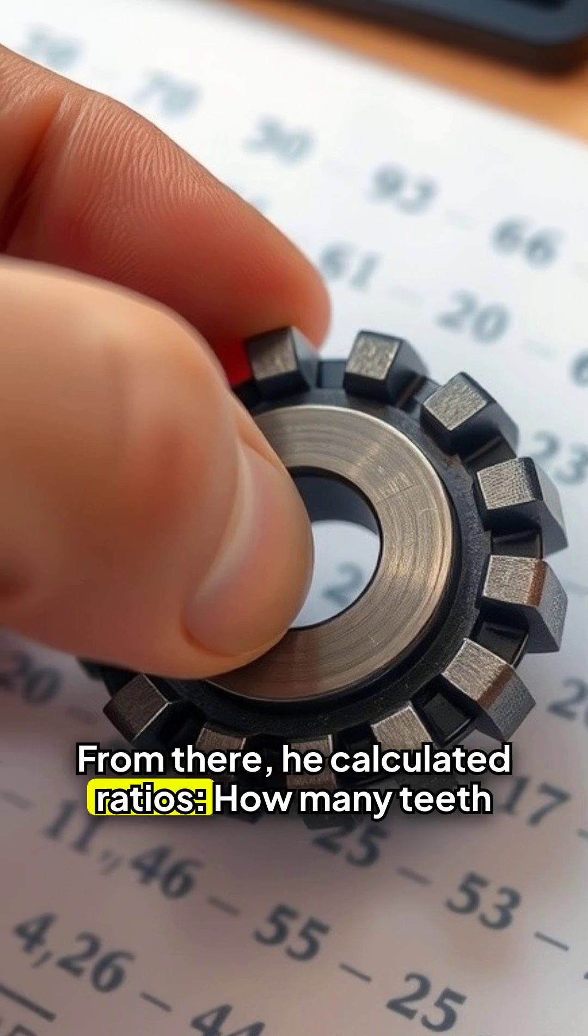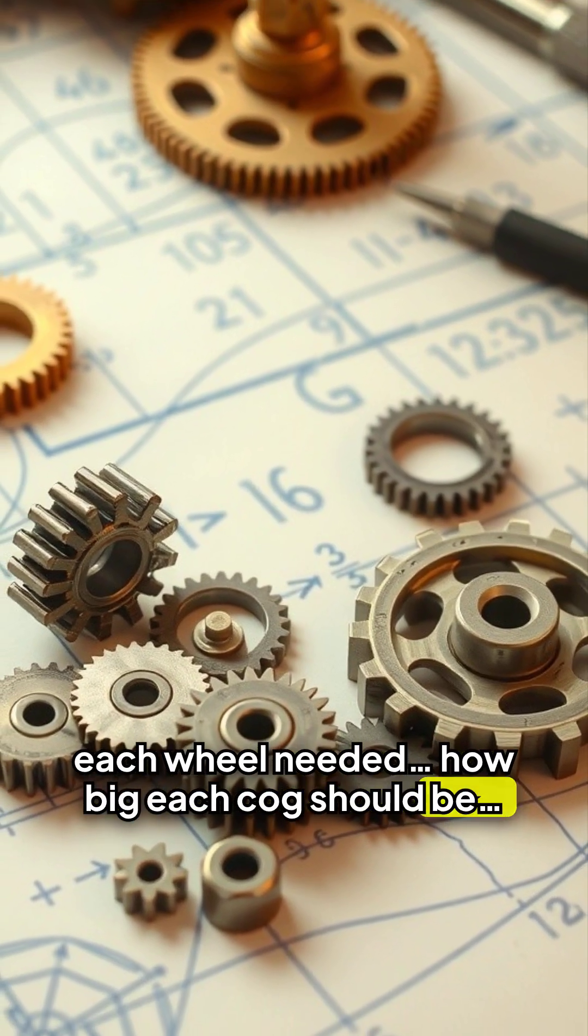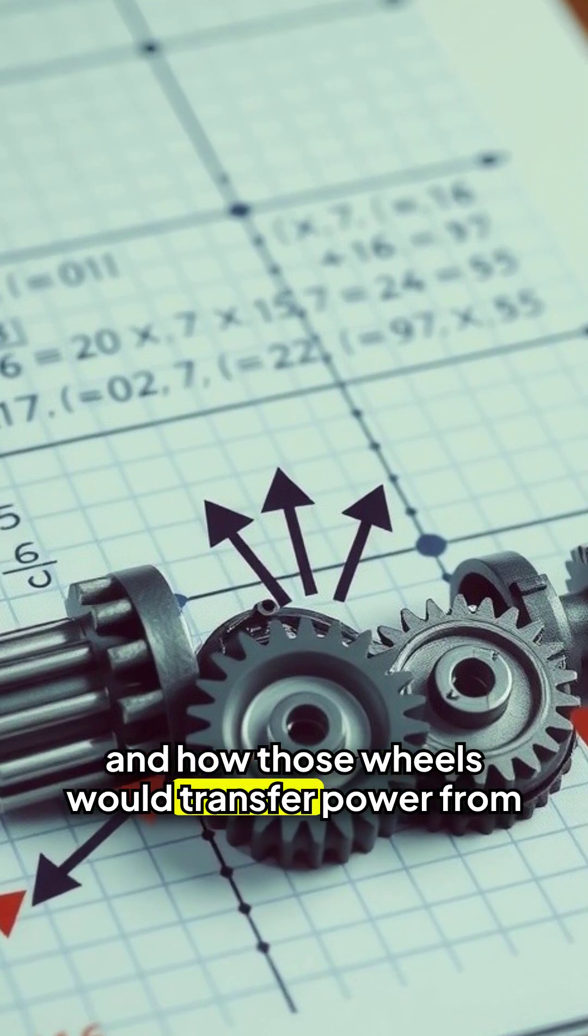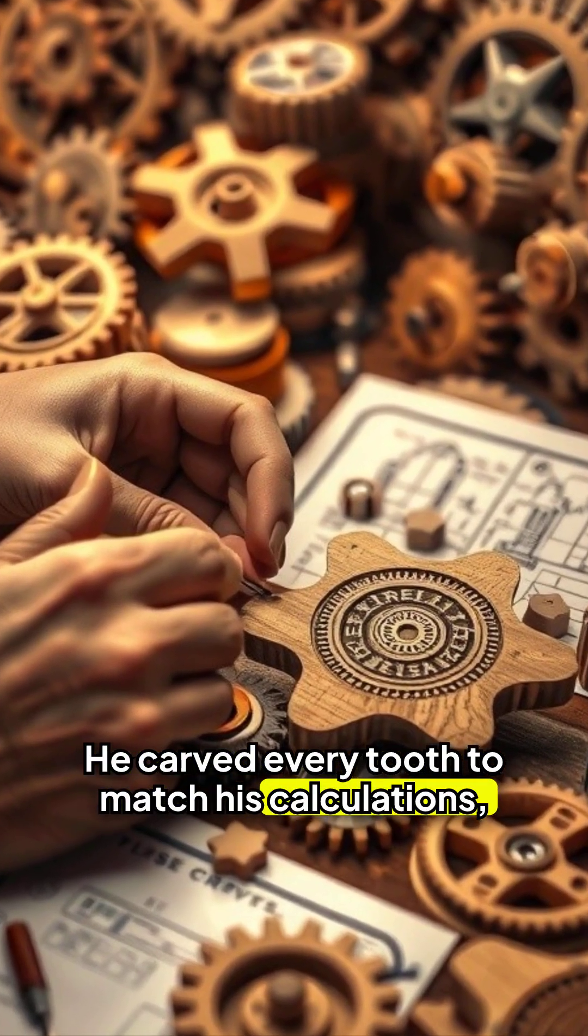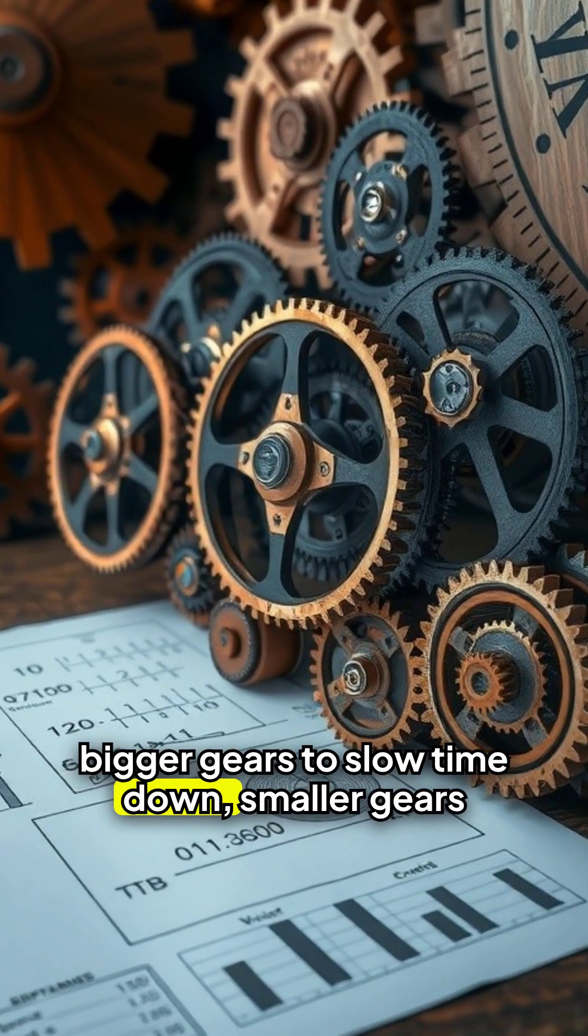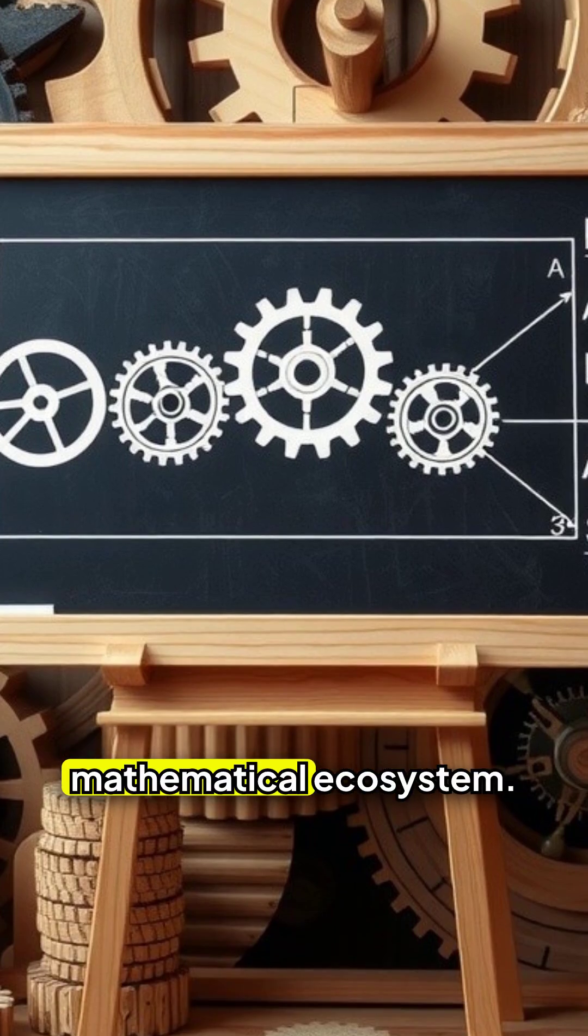From there, he calculated ratios, how many teeth each wheel needed, how big each cog should be, and how those wheels would transfer power from one to the next. He carved every tooth to match his calculations, bigger gears to slow time down, smaller gears to speed it up, each ratio balanced like a mathematical ecosystem.